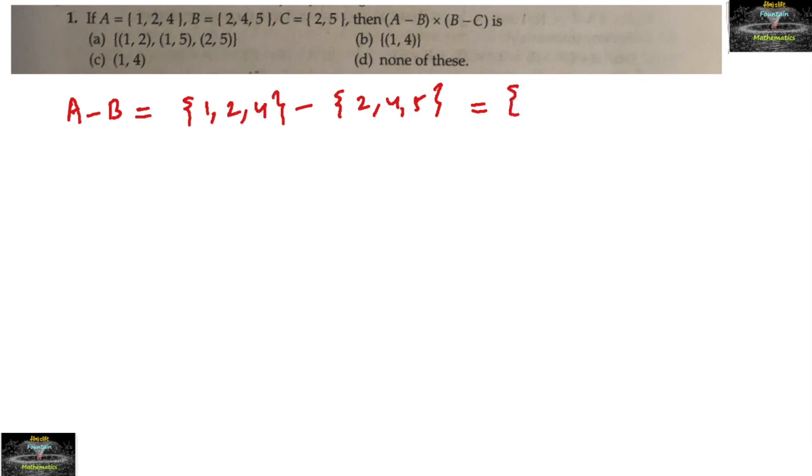The elements which are common here are 2 and 4, so the element which is left in A is only 1. Therefore, A-B is {1}.